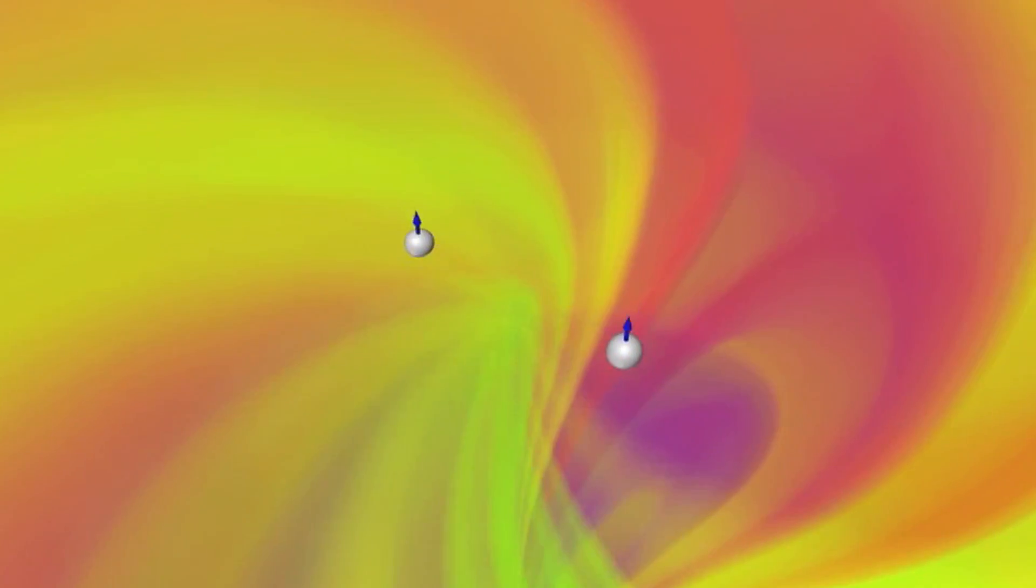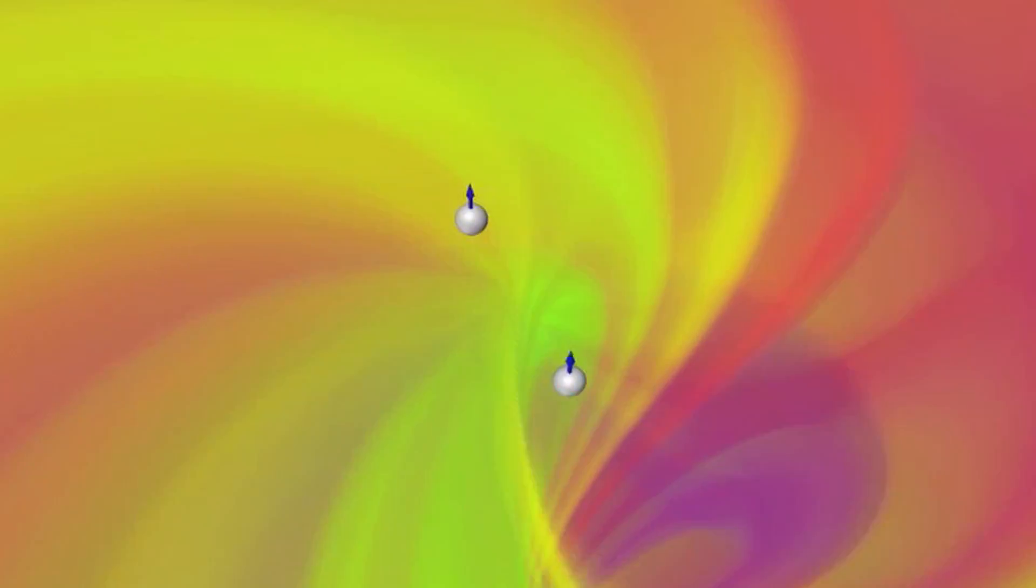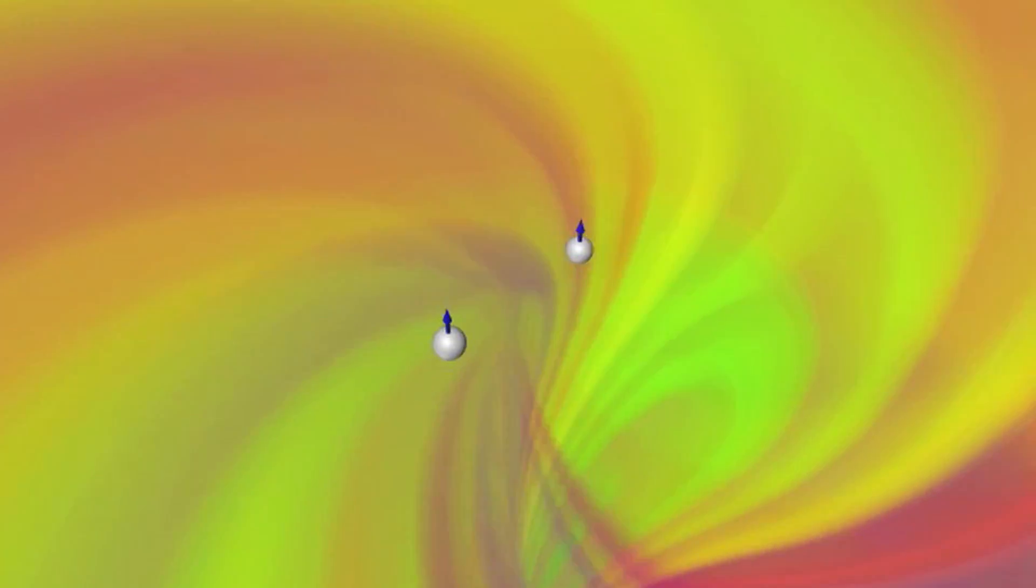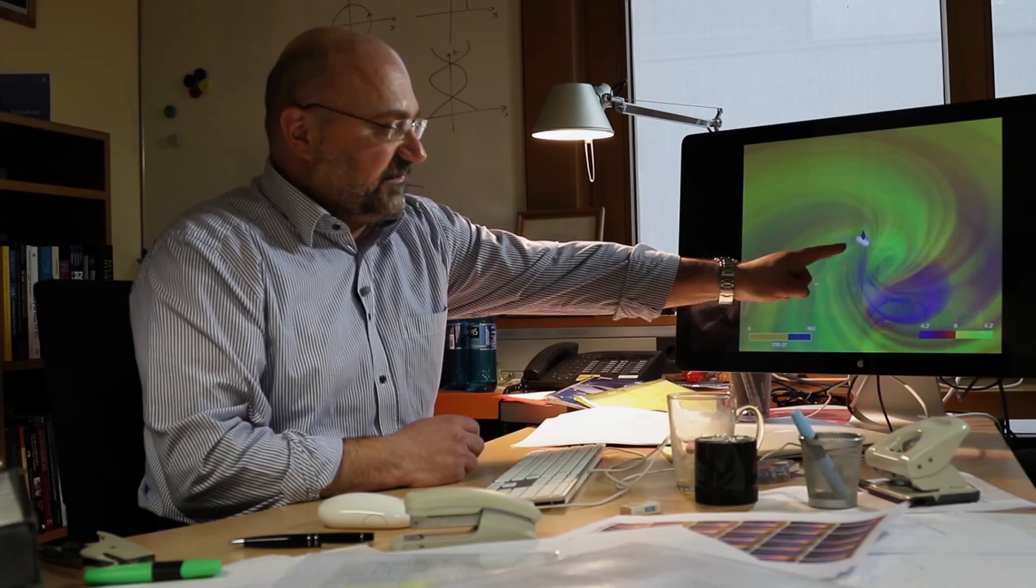Because they are getting closer and closer and closer, at one point they will get so close that they merge. And this is the time, the very time when they merge. And they produce a single black hole. So this is the horizon of the merged black hole.